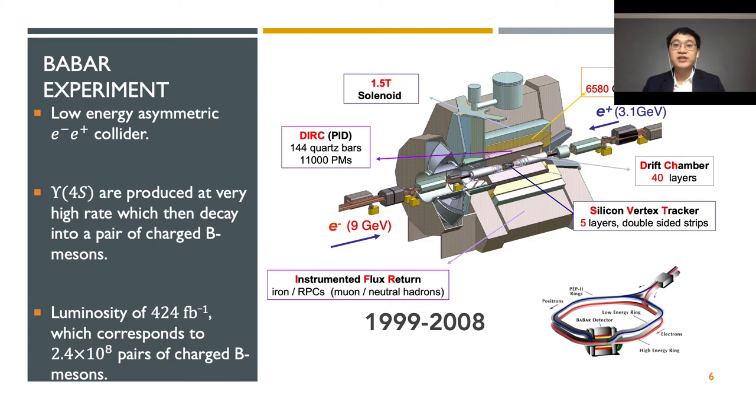Before getting into the details, let's take a quick look at the BaBar experiment. It is a low-energy asymmetric electron-positron collider that was operated from 1999 to 2008. It produced upsilon-4s at a very high rate with the luminosity of more than 400 inverse femtobarn, which then decayed into more than 200 million pairs of charged B mesons.